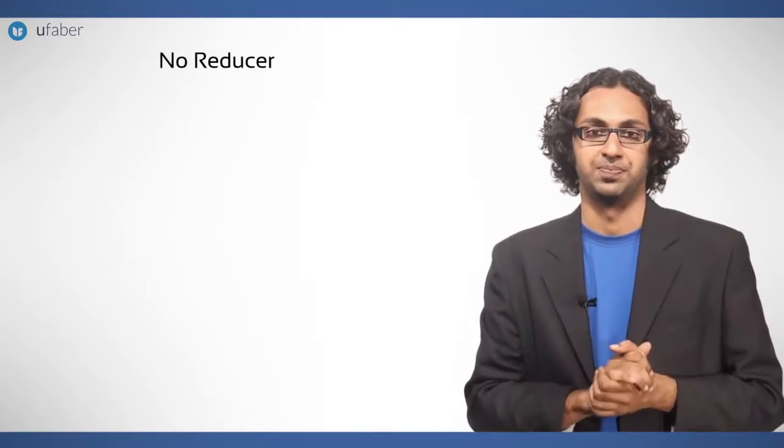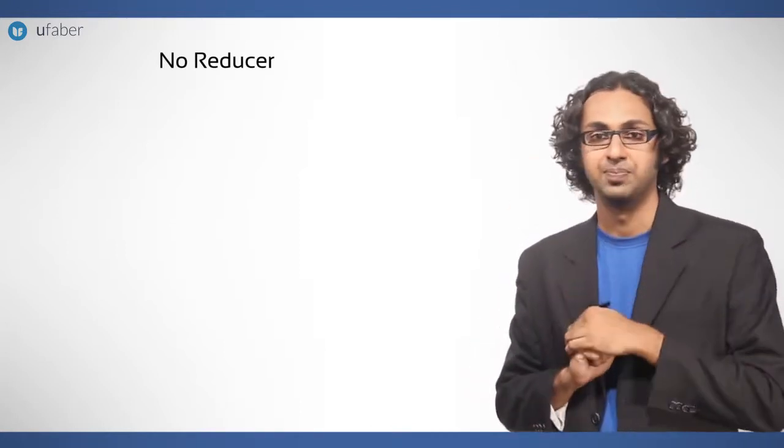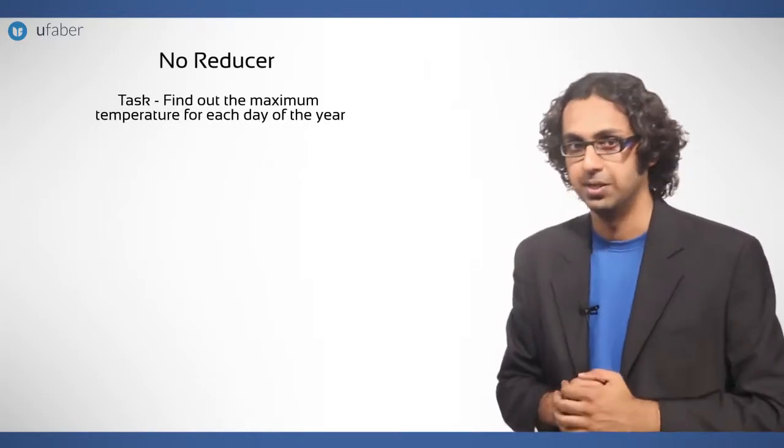Now there is another case of no reducer. Let us just go back to our example of weather data file for the year 1900. Suppose we have to find out the maximum temperature for each day of the year.